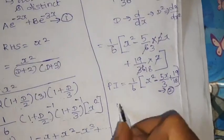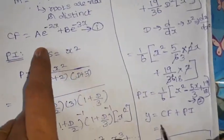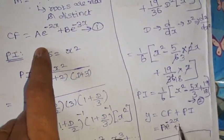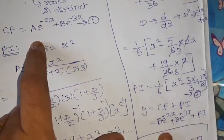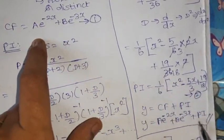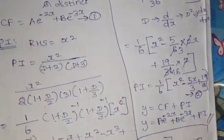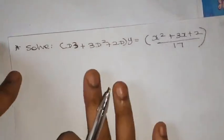The complete solution is y = CF + PI, adding equations 1 and 2: y = A·e^(−2x) + B·e^(−3x) + (1/6)(x² − 5x/3 + 19/18). Whenever x^k appears on the RHS, we follow this procedure. We will solve a few more problems of this type.